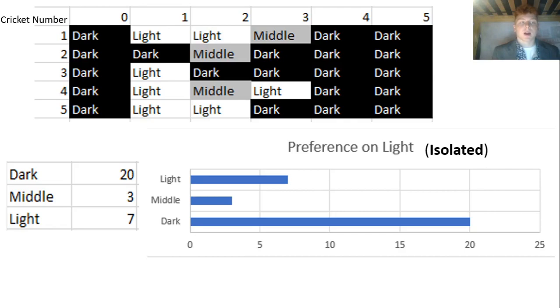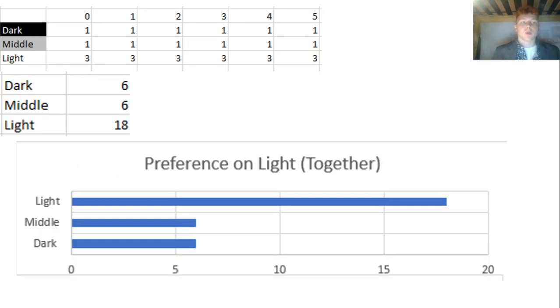Then using these graphs and data tables, I found that crickets tend to prefer darkness when isolated. However, when in groups they seem to prefer light. I found this odd and so I thought that I might have messed something up.